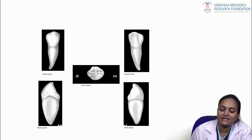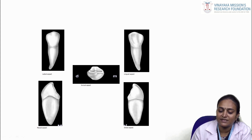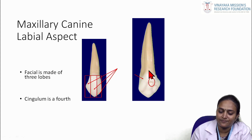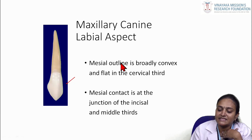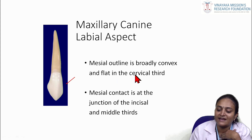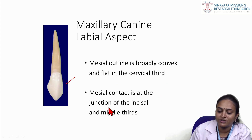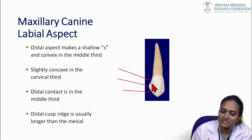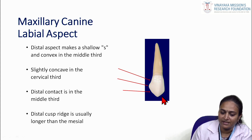The maxillary canine surface appears differently from each aspect. The facial surface is made up of three lobes, and the cingulum is the fourth. From the labial aspect, the mesial outline is broadly convex and flat in the cervical third, with mesial contact at the junction of the incisal and middle thirds. The distal aspect shows a shallow S-curve, convex in the middle third, slightly concave in the cervical third, and the distal contact is in the middle third.